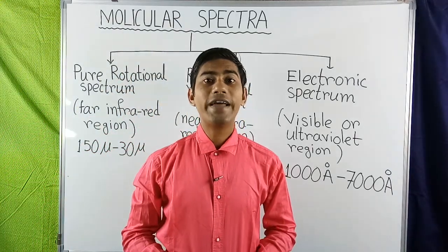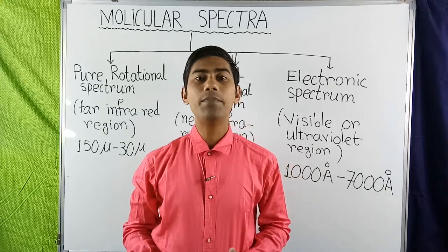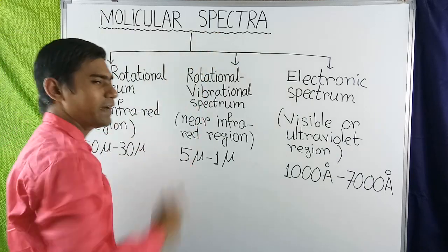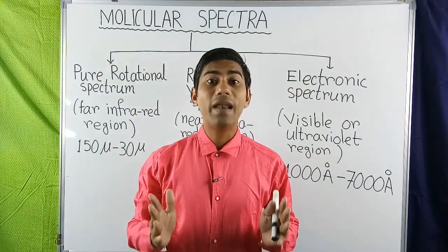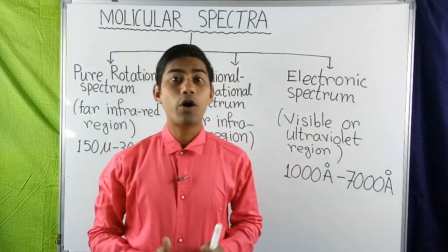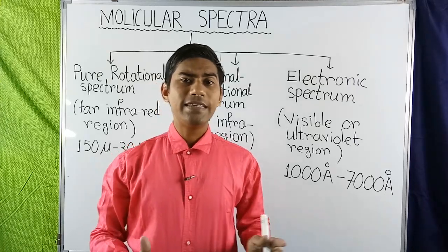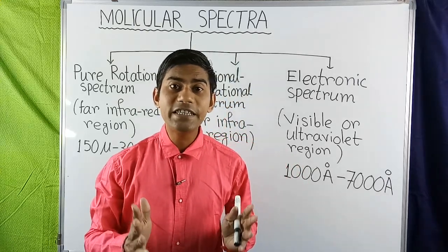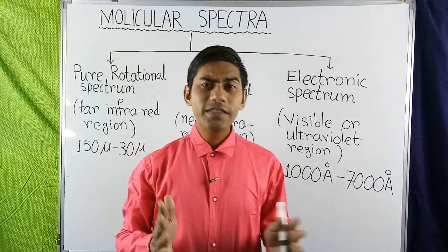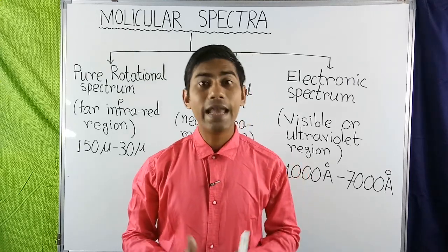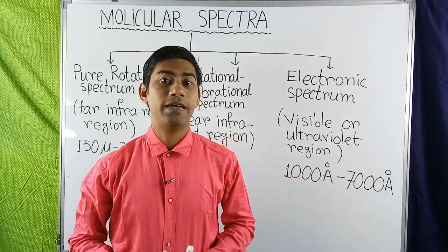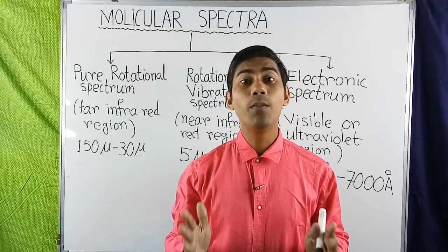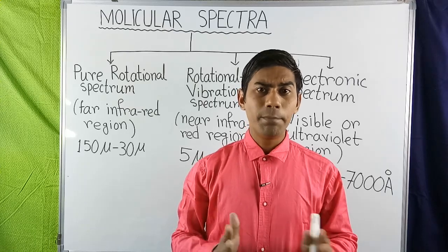Hello friends, welcome to this lecture. I am Om Landas. Today I will discuss about molecular spectra. The spectra of light emitted from a gas discharge tube is generally found to consist of a number of discrete spectral lines. This type of spectrum is known as line spectrum, and its origin can be adequately explained with the help of the Bohr–Sommerfeld model.